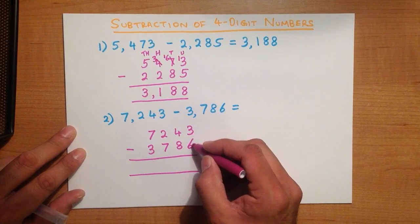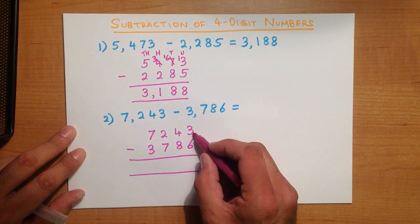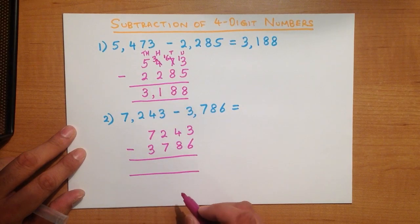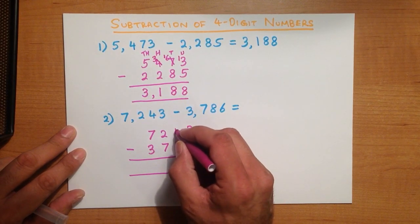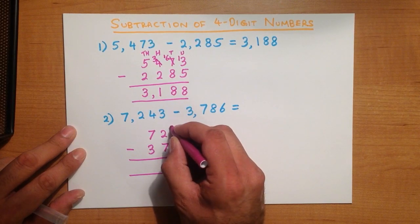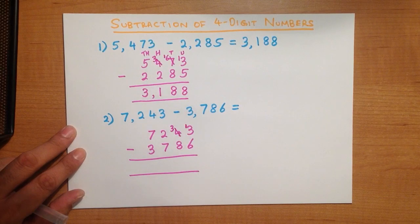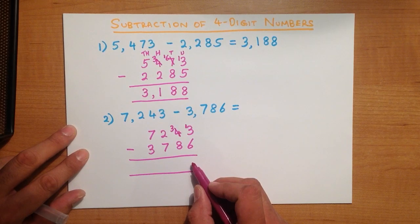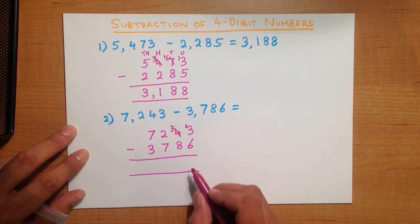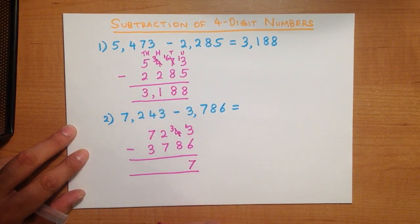The first column: 3 minus 6. Well, we can't do that because 3 is smaller than 6. So what do we do? We take 1 from the 4 — we cross out the 4, and 4 minus 1 is 3 — and we put that 1 over here. So this column now becomes 13 minus 6, which is 7.